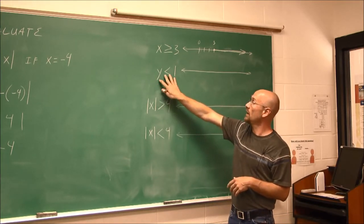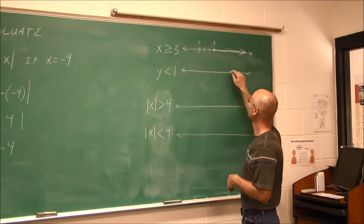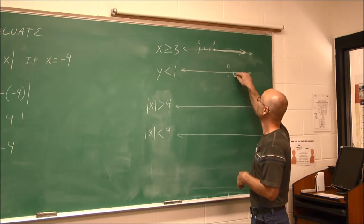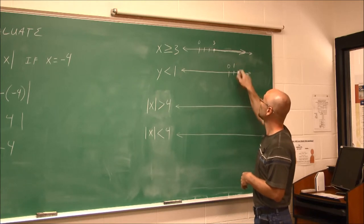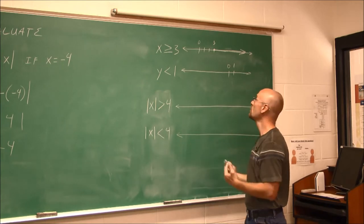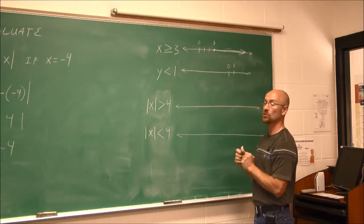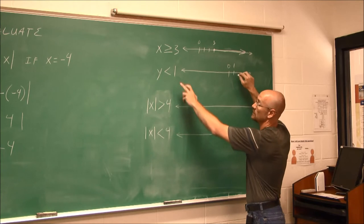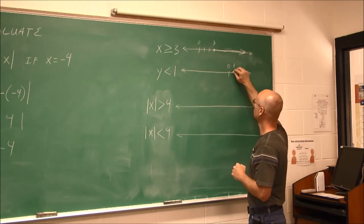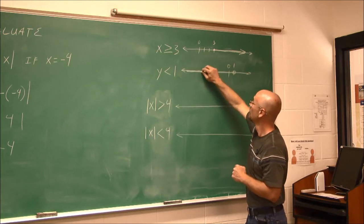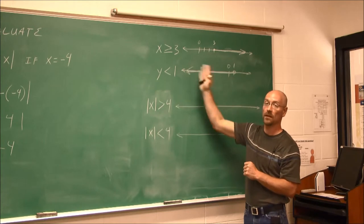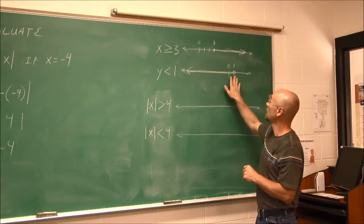The next statement says y is less than 1. We find our reference point of 0 and go one tick mark away — here's the number 1. Since y is less than 1, values are to the left. Because it's not equal to, we use an open circle. Then we shade the number line to the left, because those are all the values less than 1.